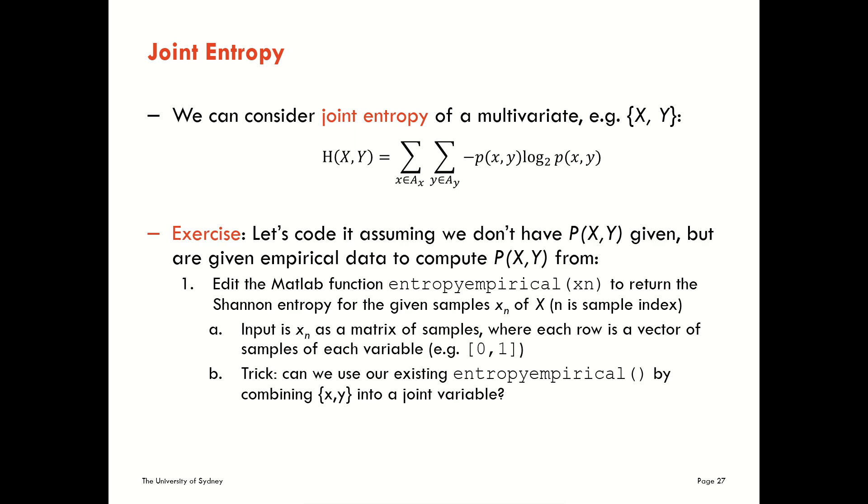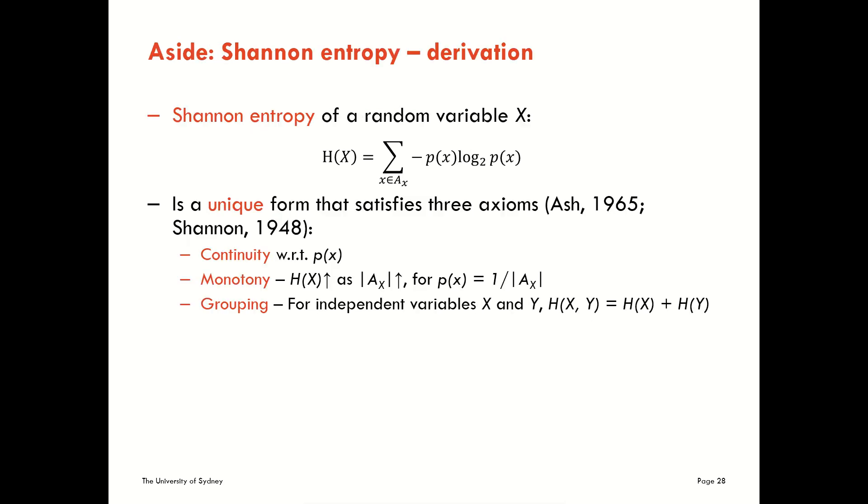We'll skip over the coding exercises. You'll do those separately. The last thing I want to mention in this short video is about where the Shannon entropy comes from. We can talk about this now since we've seen the joint entropy. So what's really important about our equation for Shannon entropy and our equation for the Shannon information content is that these are unique forms, unique forms that satisfy three specific axioms.